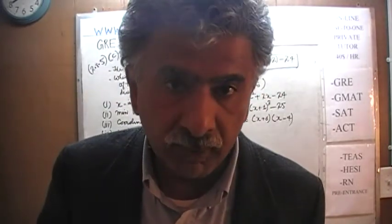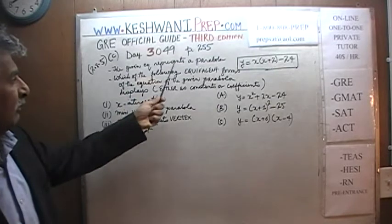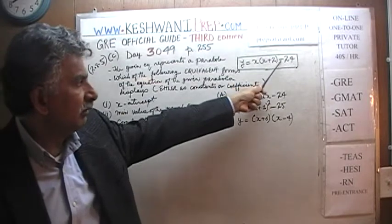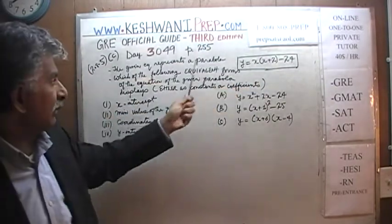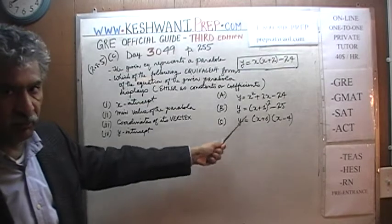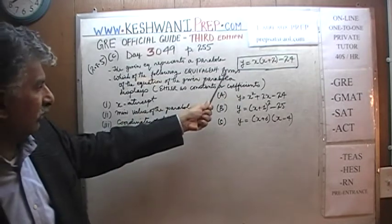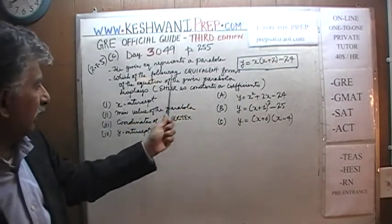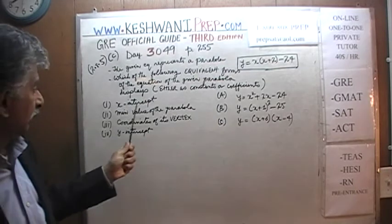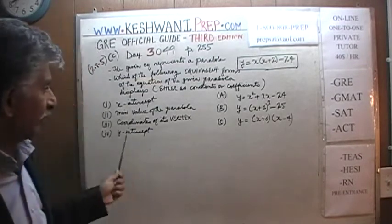The problem is already on the blackboard. I am going to read it to you and then we will see what we can do with it. It says that the given equation represents the parabola: y = x(x + 2) − 24. The question is: which of the following equivalent forms of the given parabola displays, either as a constant or coefficient, the x-intercept, the y-intercept, the minimum value of the parabola, and the coordinates of the vertex? We simply have to match which form it is.